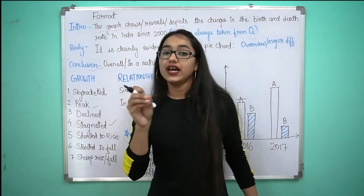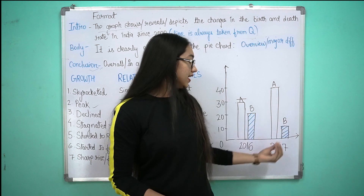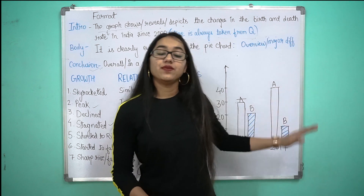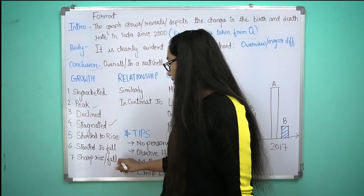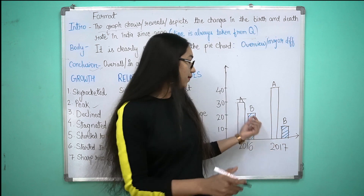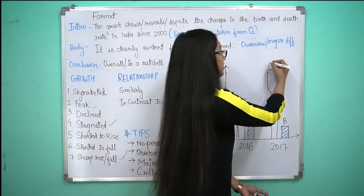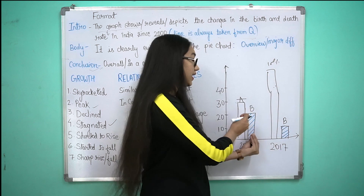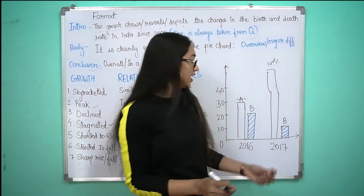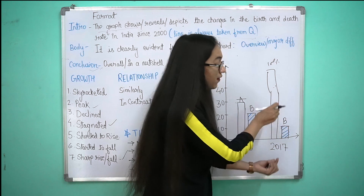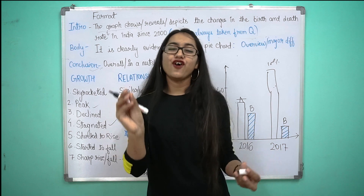यहाँ पे हम 'started to rise' और 'started to fall' भी use कर सकते हैं। जैसे अगर data आगे भी दिया हो तो: 'Product A की growth started to rise from this year' और तब तक बढ़ती रही — यह 'started to fall' का भी ऐसे ही use होगा। इसके अलावा अगर एकदम से बड़ी बढ़त या गिरावट हो, तो हम 'sharp rise' या 'sharp fall' लिख सकते हैं। जैसे: 'Product A की growth में हम एक sharp rise देख सकते हैं' या 'Product B की growth में एक sharp fall देख सकते हैं।'